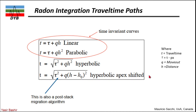Looking at the mathematical equations for the Radon integration travel time path: for linear events, t equals tau plus px, where t is travel time, tau is intercept time, p is slowness, and h is offset distance. A similar equation applies for parabolic Radon transform. For the hyperbolic Radon transform, the equation changes accordingly.